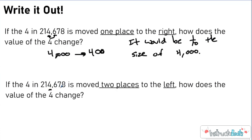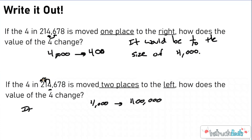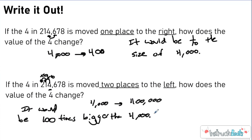Now this one — same number, same digit — if the 4 in 2,214,678 is moved two places to the left, how does the value change? Instead of being 4,000, we move it two places to the left, which would make it 400,000. Because we moved it two places to the left and each place value gets ten times bigger, it would be 100 times bigger than 4,000. You can use your place value knowledge or your math to prove it: it went from 4,000 to 400,000, so it had to get 100 times bigger.